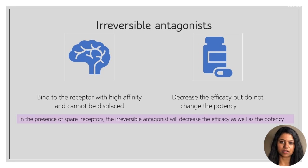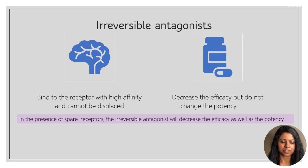An irreversible antagonist binds to the receptor with high affinity and cannot be displaced. It behaves like a non-competitive antagonist in that it decreases efficacy but does not change potency. However, if spare receptors are present, then an irreversible antagonist will decrease both efficacy and potency.